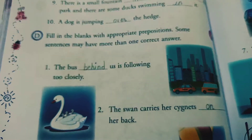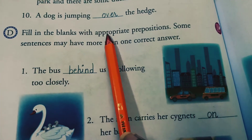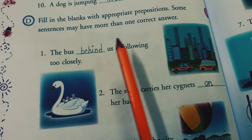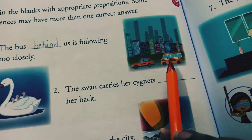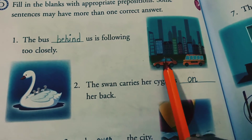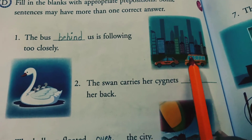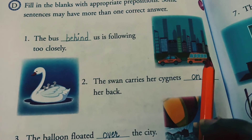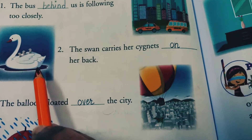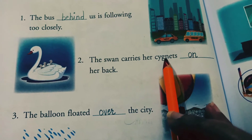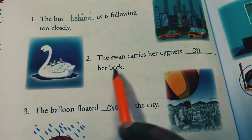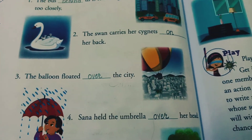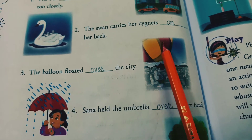Now let's do the next exercise. Fill in the blanks with appropriate prepositions. The bus behind us is following too closely. The swan carries her cygnets on her back. The balloon floated over the city.